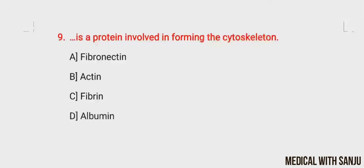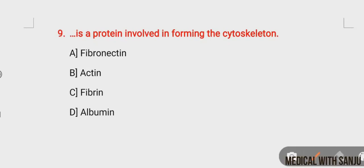Question number nine: which protein is involved in forming the cytoskeleton? Option A: fibronectin, option B: actin, option C: fibrin, option D: albumin. The right answer is option B, actin. The cytoskeleton is the internal structural framework of the cell, consisting of three filament types: microfilaments (fibres of protein actin), microtubules, and intermediate filaments. It gives shape and maintains the three-dimensional structure of the cell.